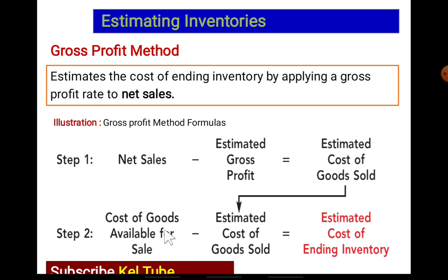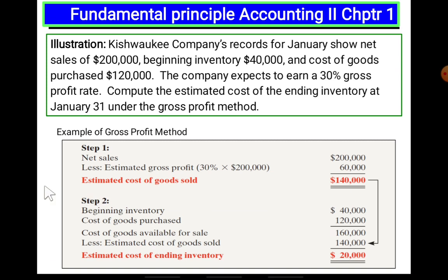For a particular illustration: a company's net sales for January are $220,000, beginning inventory is $40,000, cost of goods purchased is $120,000. The company expects to earn a 30% gross profit rate. Compute the estimated cost of ending inventory at January 31 under the gross profit method.